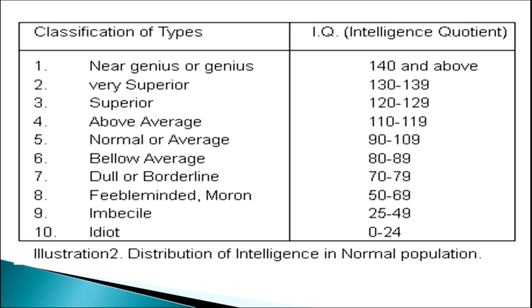When we talk about intelligence, we must know the various IQ score ranges. The table clearly indicates IQ ranges: a score of 140 and above indicates the individual is near genius or a genius; scores of 130 to 139 mean the person is very superior. Likewise, various ranges are assigned to different levels of intelligence.